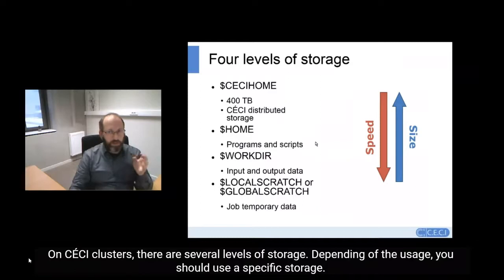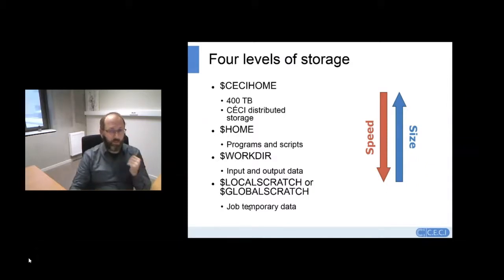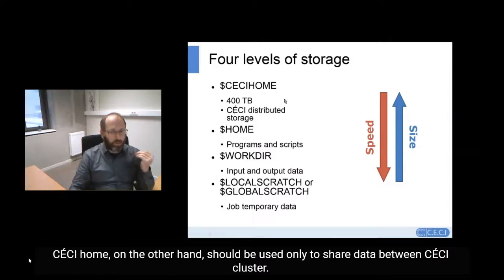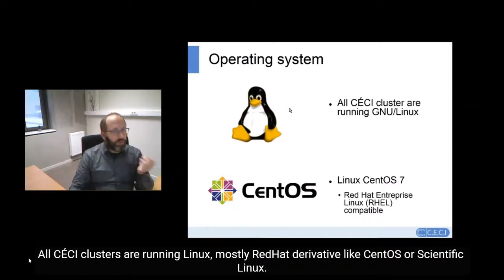On the CECI cluster, there are several levels of storage. Depending on the usage, you should use a specific storage. For example, for IO-intensive jobs, the storage attached to the compute node or the high-performance global scratch should be used for writing the output of your jobs. On the other hand, the CECI home should be used only to share data between CECI clusters. Also, all CECI clusters are running Linux, mostly Red Hat derivatives like CentOS or Scientific Linux.